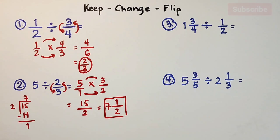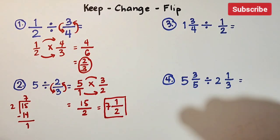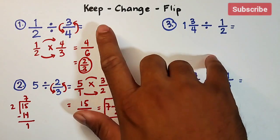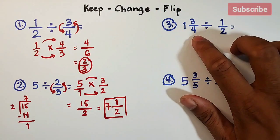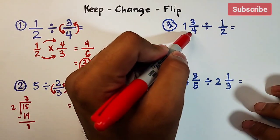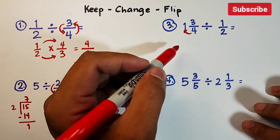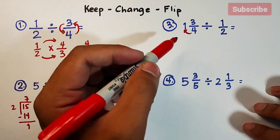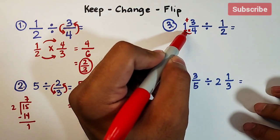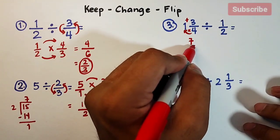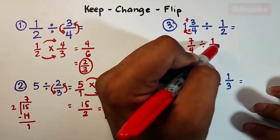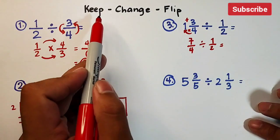Now let's move on with number 3. We have a mixed number divided by a fraction. Before you apply keep, change, and flip, first transform your mixed number into an improper fraction. Multiply: 1 times 4 is 4, then add — 4 plus 3 equals 7. Copy your original denominator which is 4. Then we have the fraction one-half, which we are just copying.